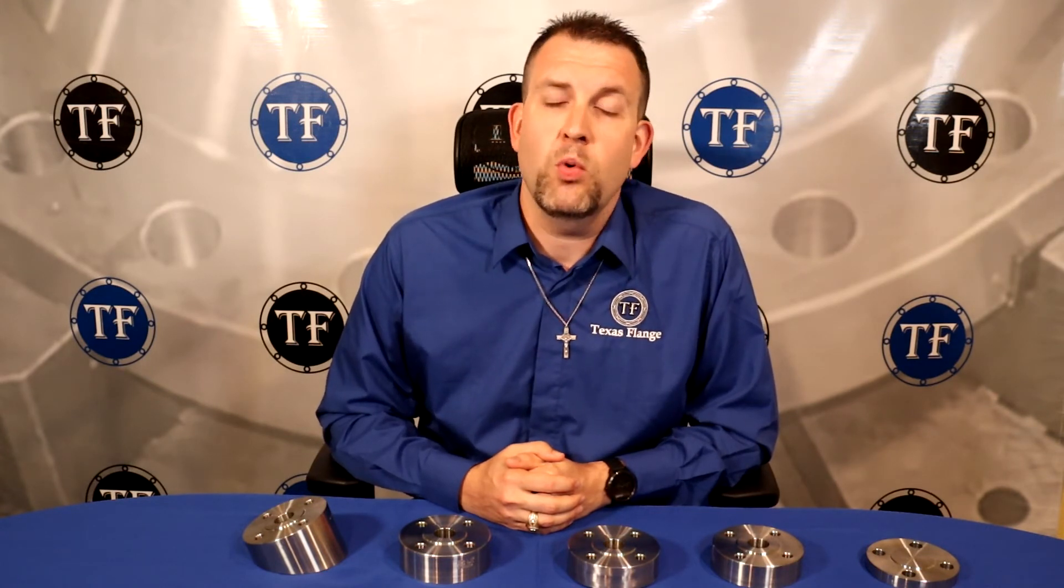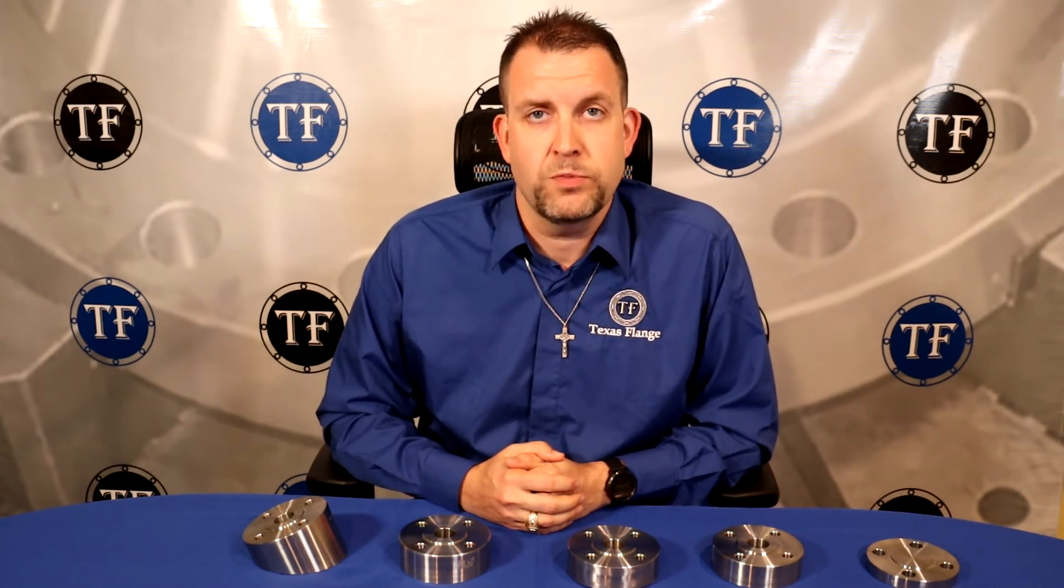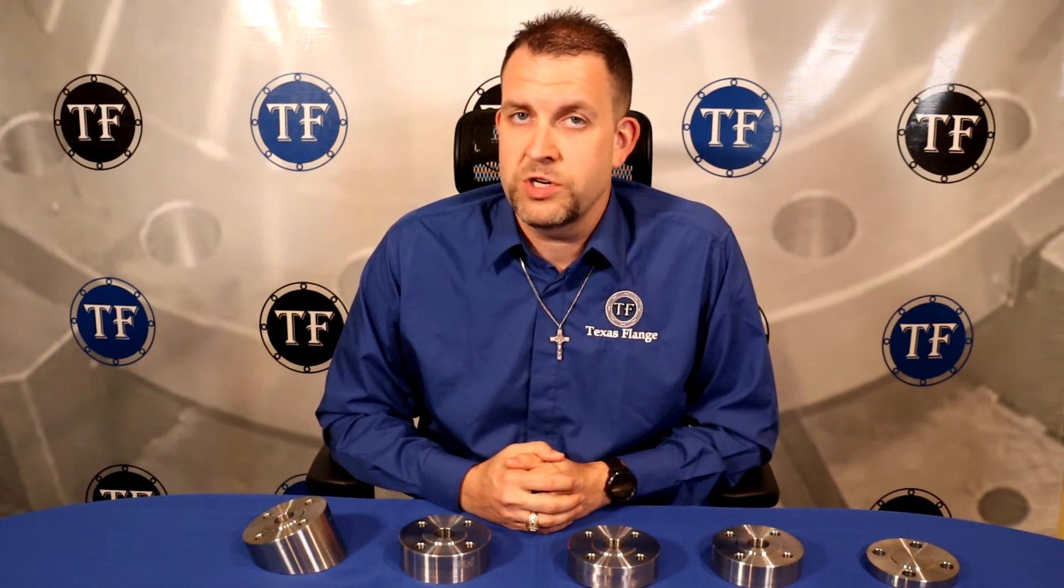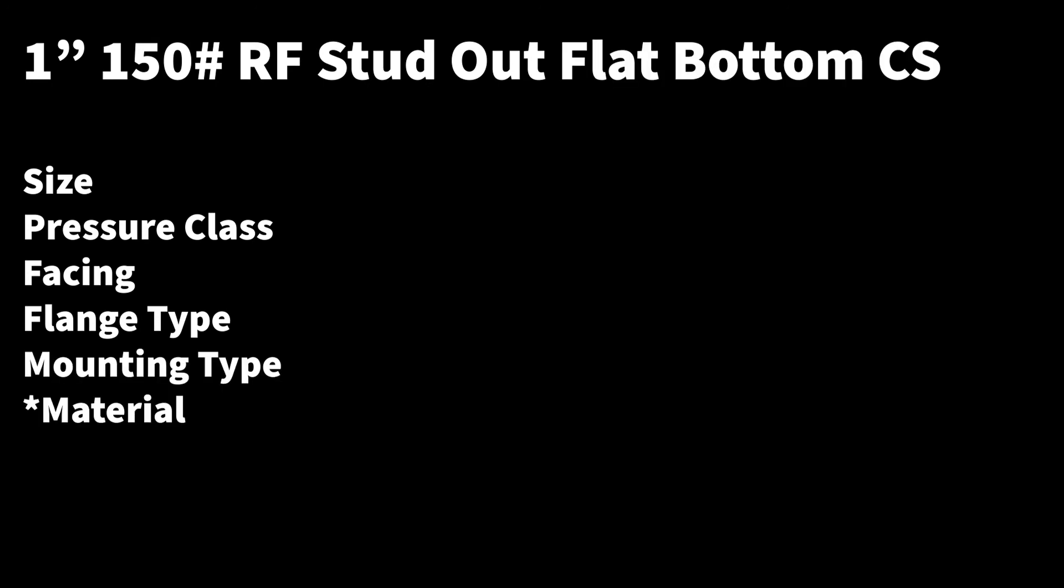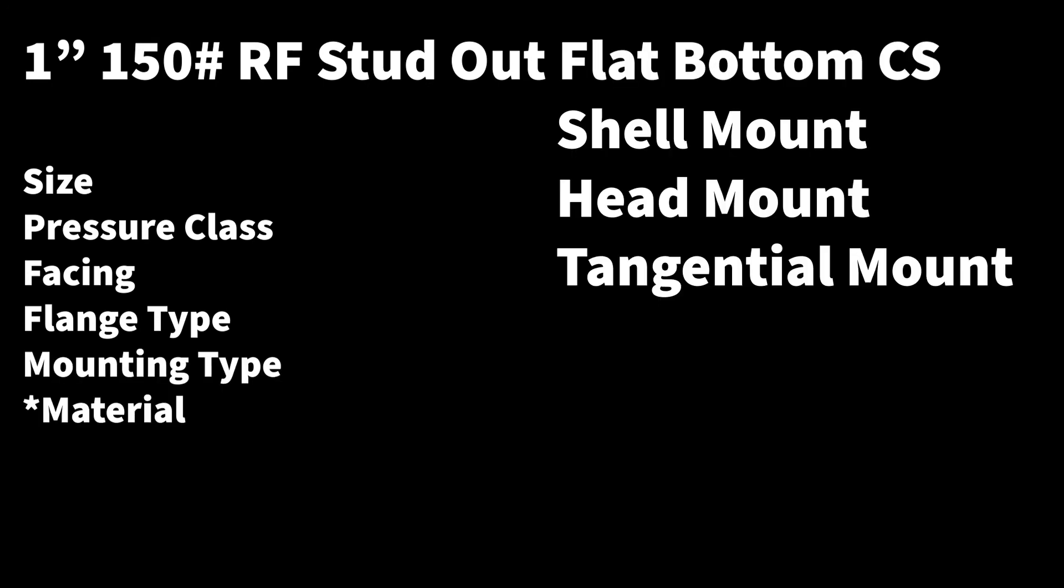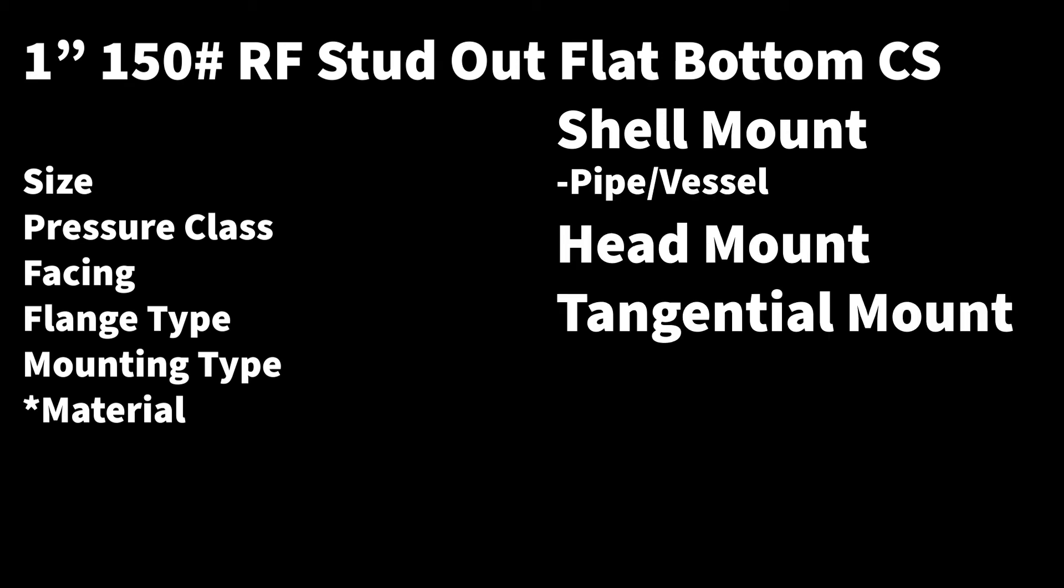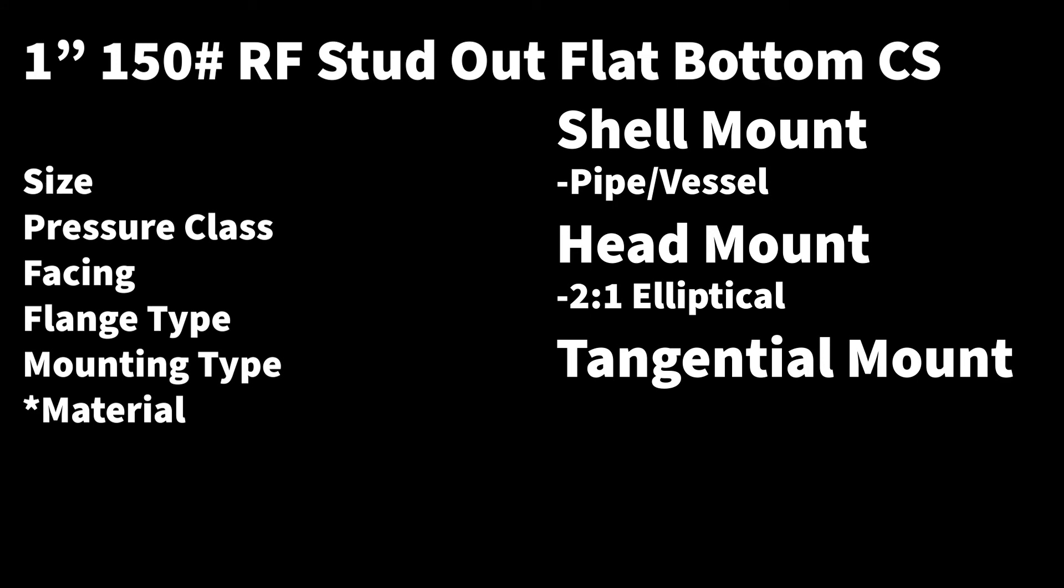This 1 inch flange has a 1.00 inch ID. To fully describe a stud outlet or a stud pad or a pad flange, you need the size, the pressure class, the facing, the type is stud out, and then the mounting type: flat bottom, shell mount, head mount, or tangential. In the latter three cases, we need to know what it's going on and what size, be it a 36 inch pipe or a 42 inch two to one elliptical head. We assume it's a two to one elliptical unless otherwise specified. And in the case of the tangential, we need to know what the offset from the centerline is.